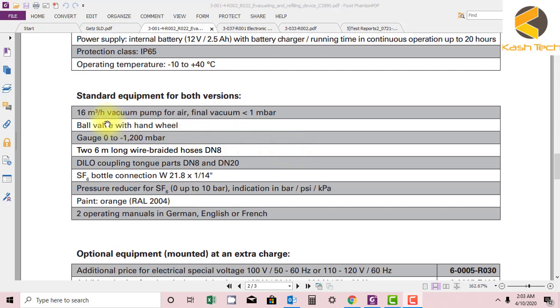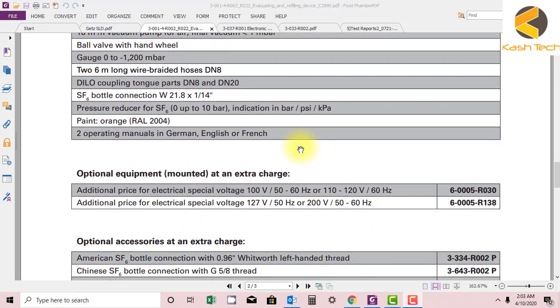It's showing also the capacity of vacuum—how much it can vacuum: 16 cubic meters per hour. The final vacuum will be less than one bar.